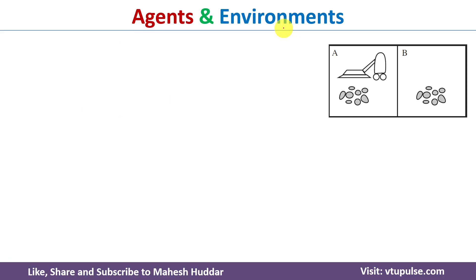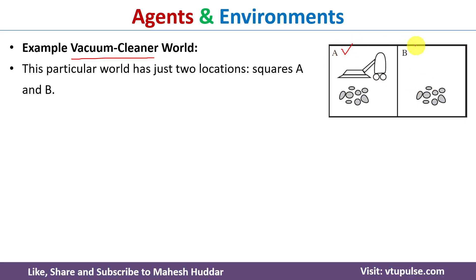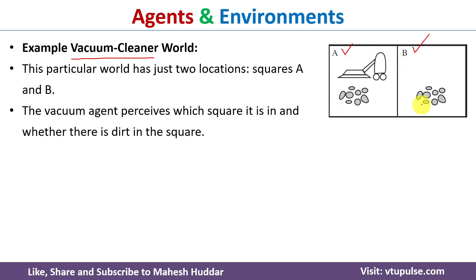Now we will take one simple example of an artificial robot and try to understand what is agent, what is environment, and so on. I will be considering the vacuum cleaner example. In this example there are mainly two squares: square A and square B. Each of these squares can be either clean or dirty, and there is a robotic vacuum cleaner present in either location — square A or square B.